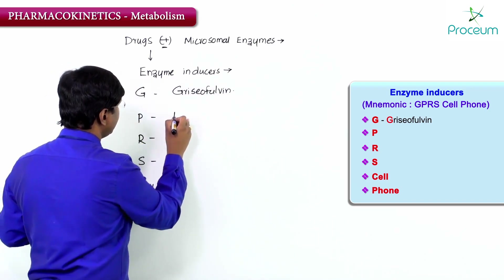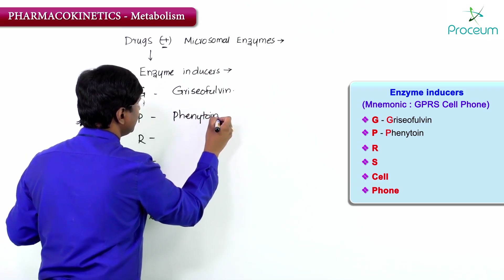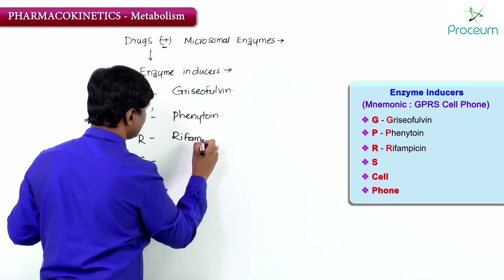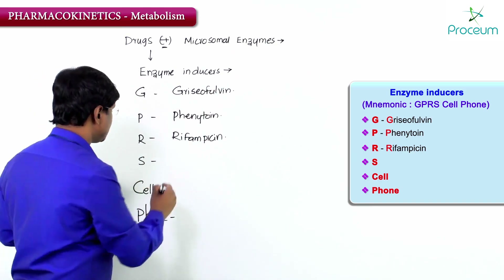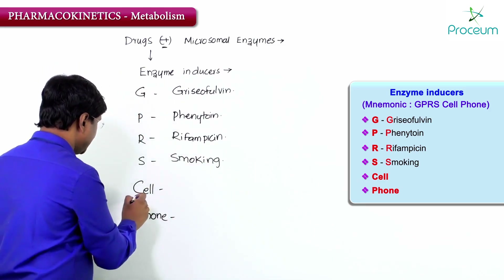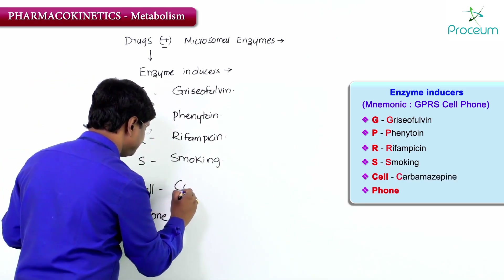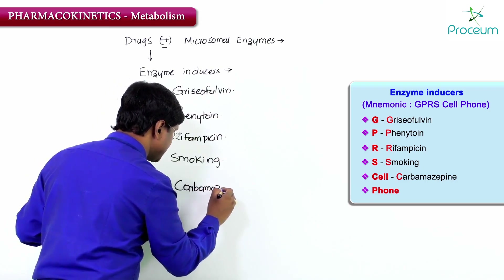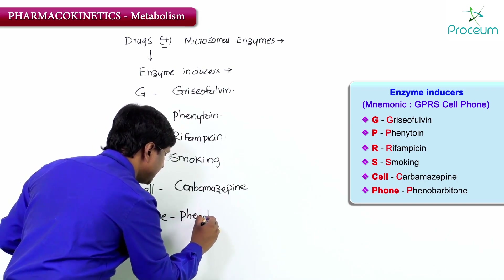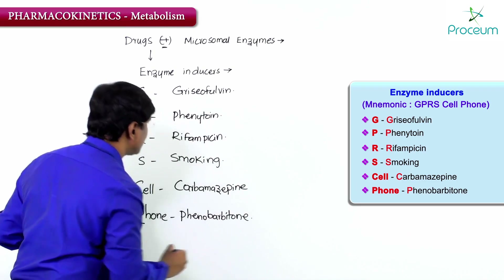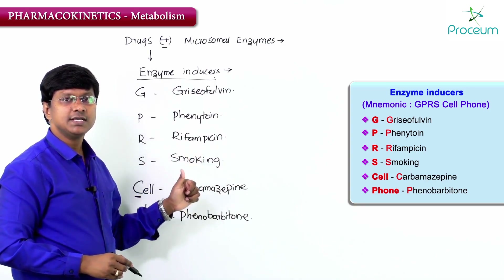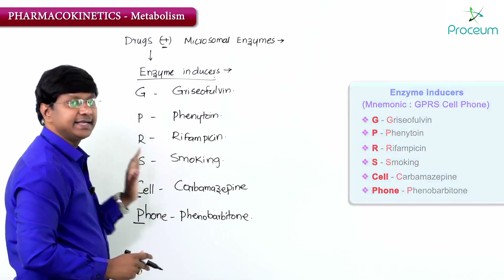In GPRS cell phone: G stands for Griseofulvin, P stands for Phenytoin (an anti-epileptic drug), R stands for Rifampicin, S stands for Smoking, C in 'cell' stands for Carbamazepine, and the last P stands for Phenobarbitone. So the enzyme inducers are Griseofulvin, Phenytoin, Rifampicin, Smoking, Carbamazepine, and Phenobarbitone.